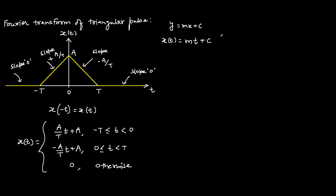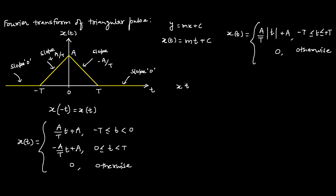We can also write x(t) as (A/T)|t| + A from minus T to plus T, and 0 otherwise. There is one more representation: x(t) = A · tri(t/T), where A is the peak amplitude and T is half the width of the triangular pulse. The total width is 2T.